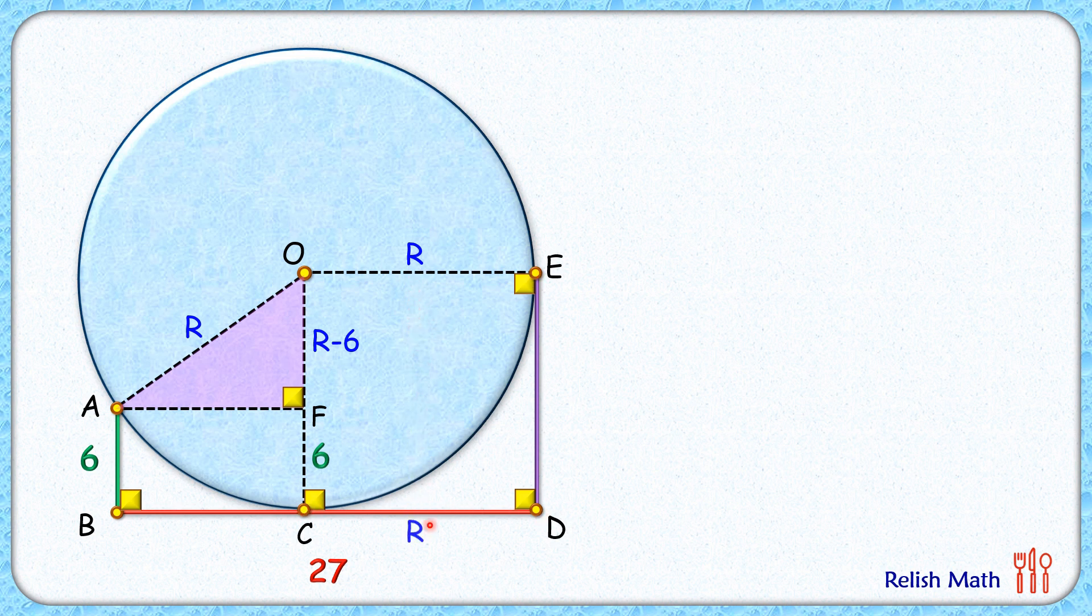And AF will be the same as BC, or 27 minus R. Now in this right angle triangle OFA, applying Pythagorean theorem, we get this equation.